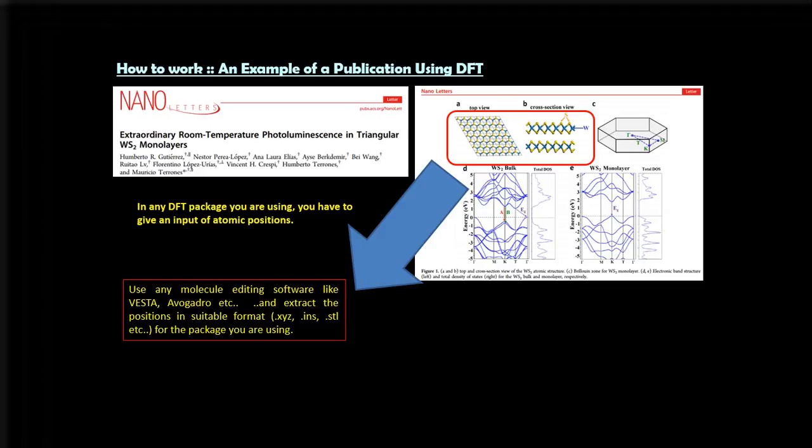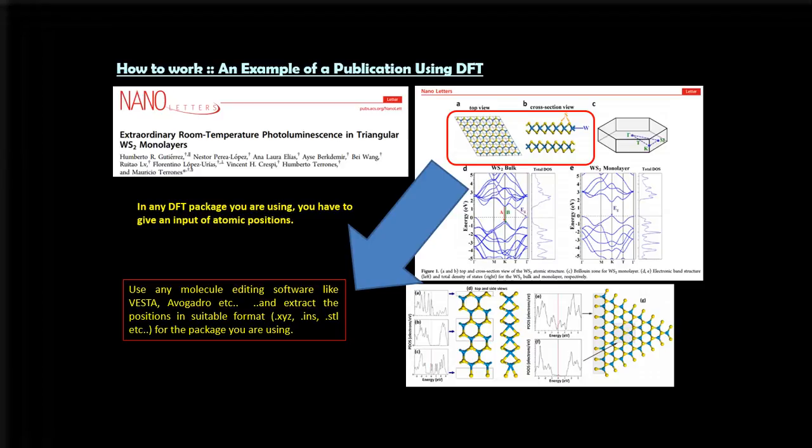So you can use any molecule editing software like this. You can extract the position in your suitable format. Like maybe in your package, I don't know what package you are using, maybe in your package the suitable format is .xyz, it can be .htl, right? So then you can calculate anything you want. Here they have calculated also partial density of states.